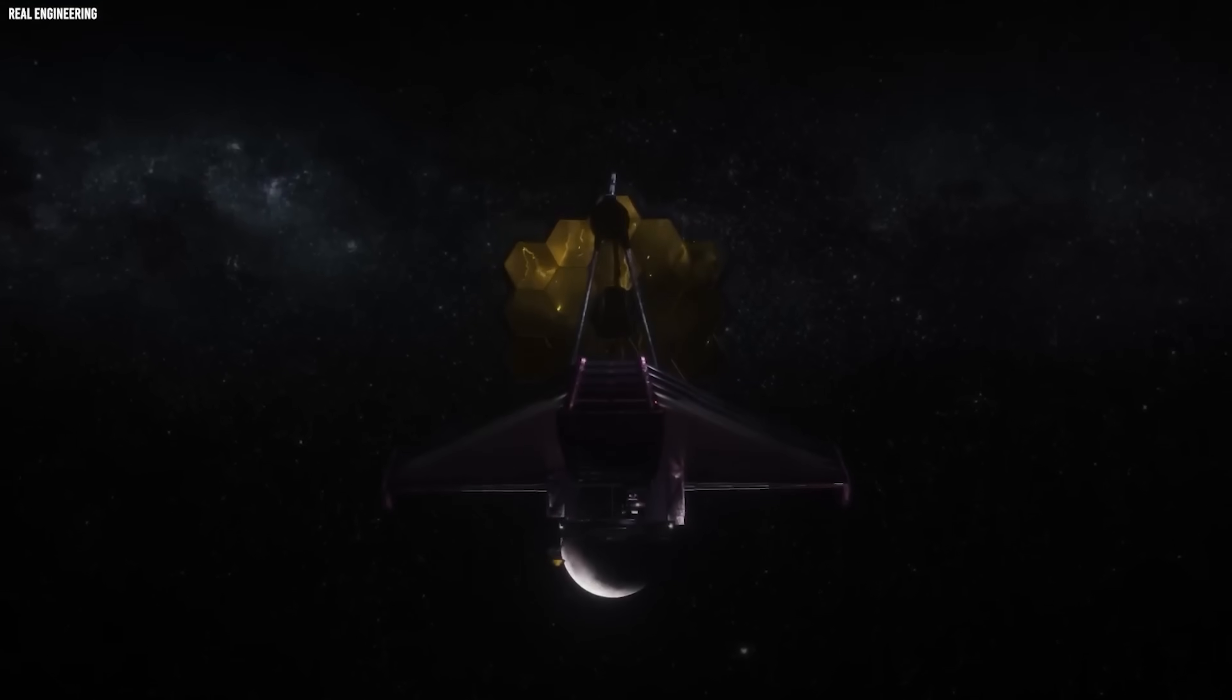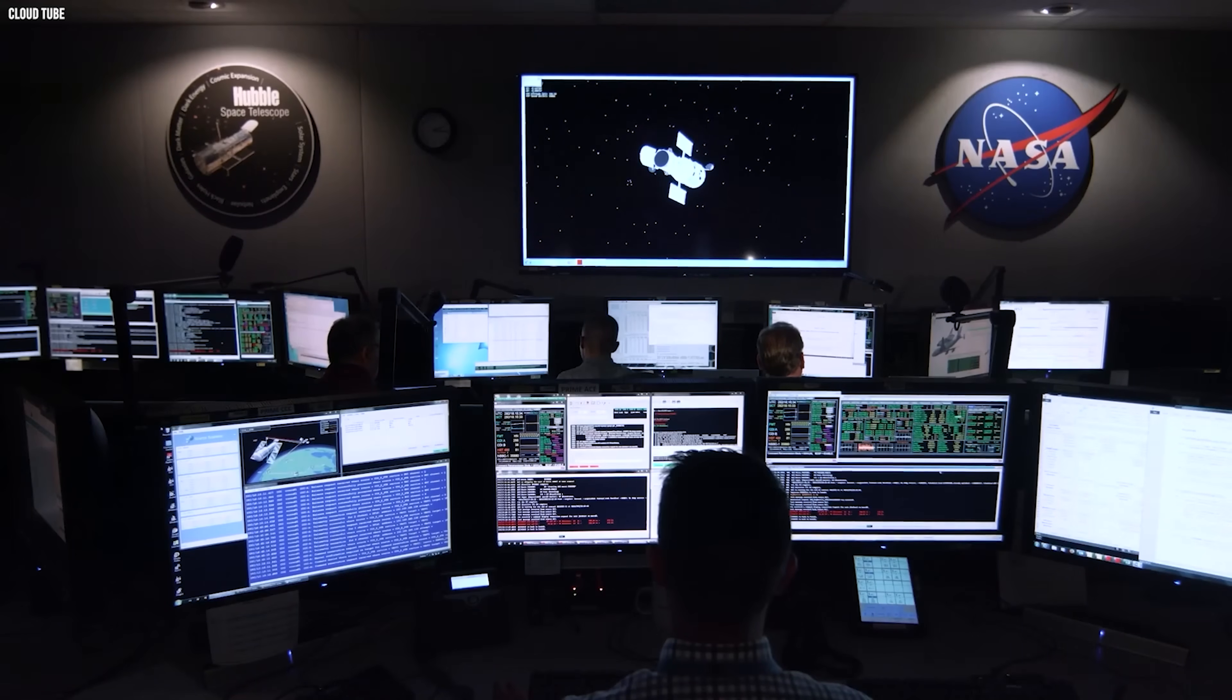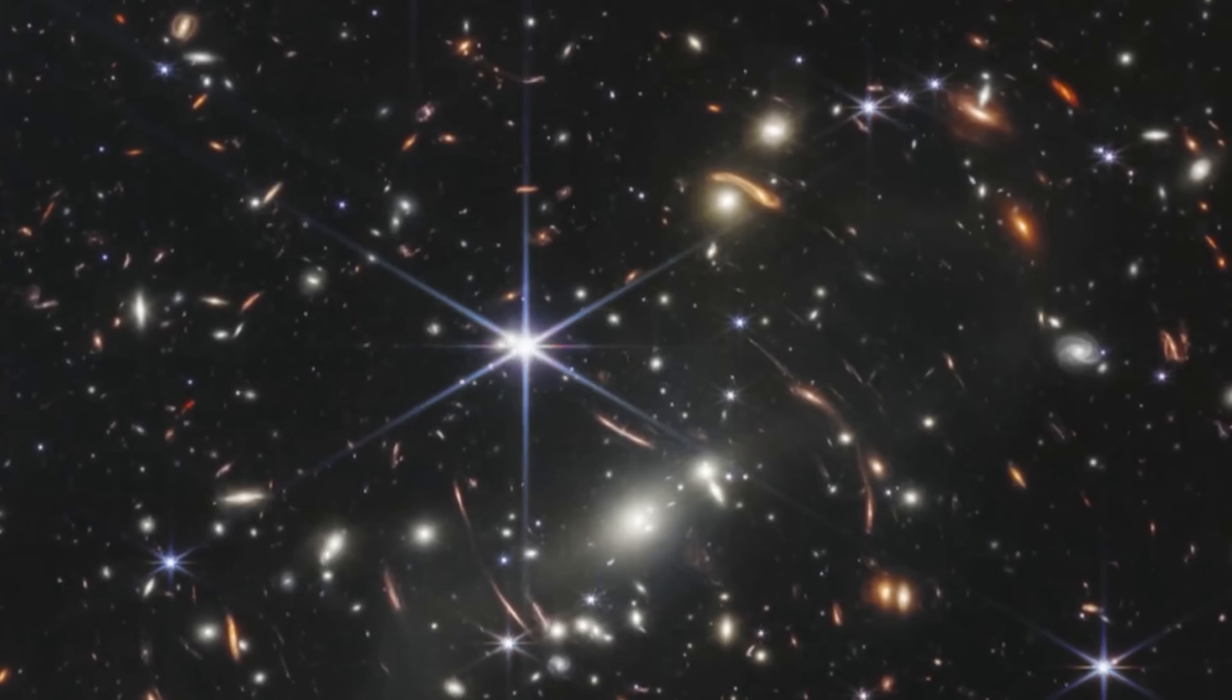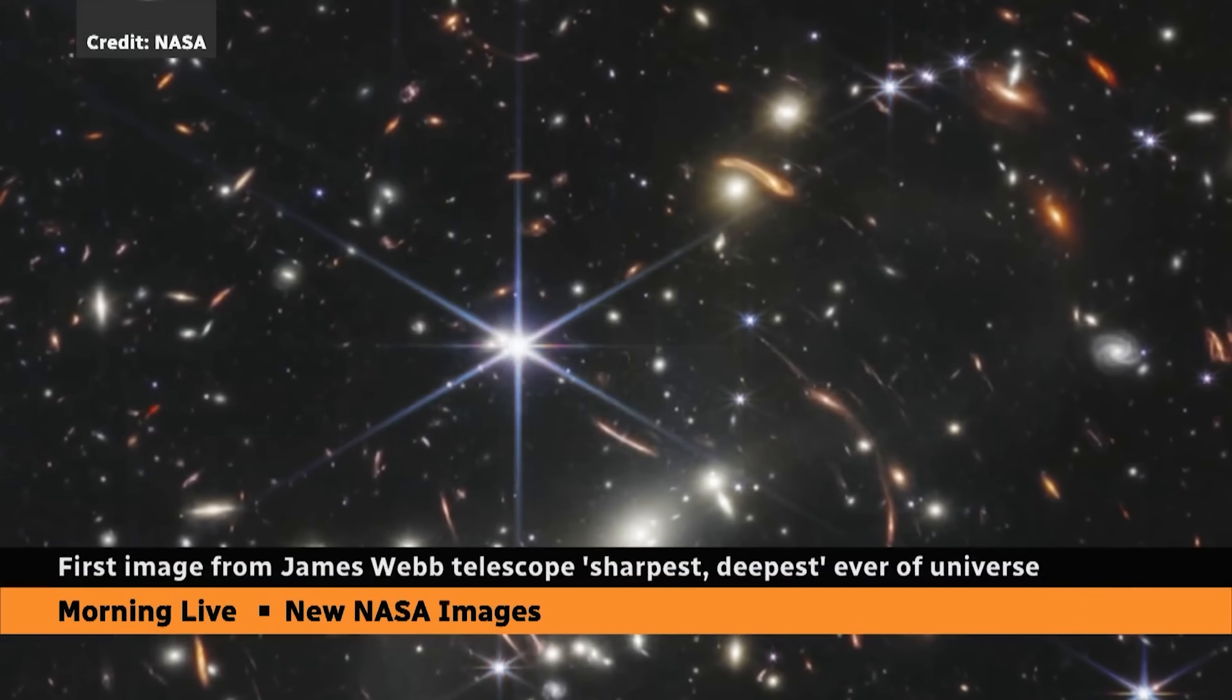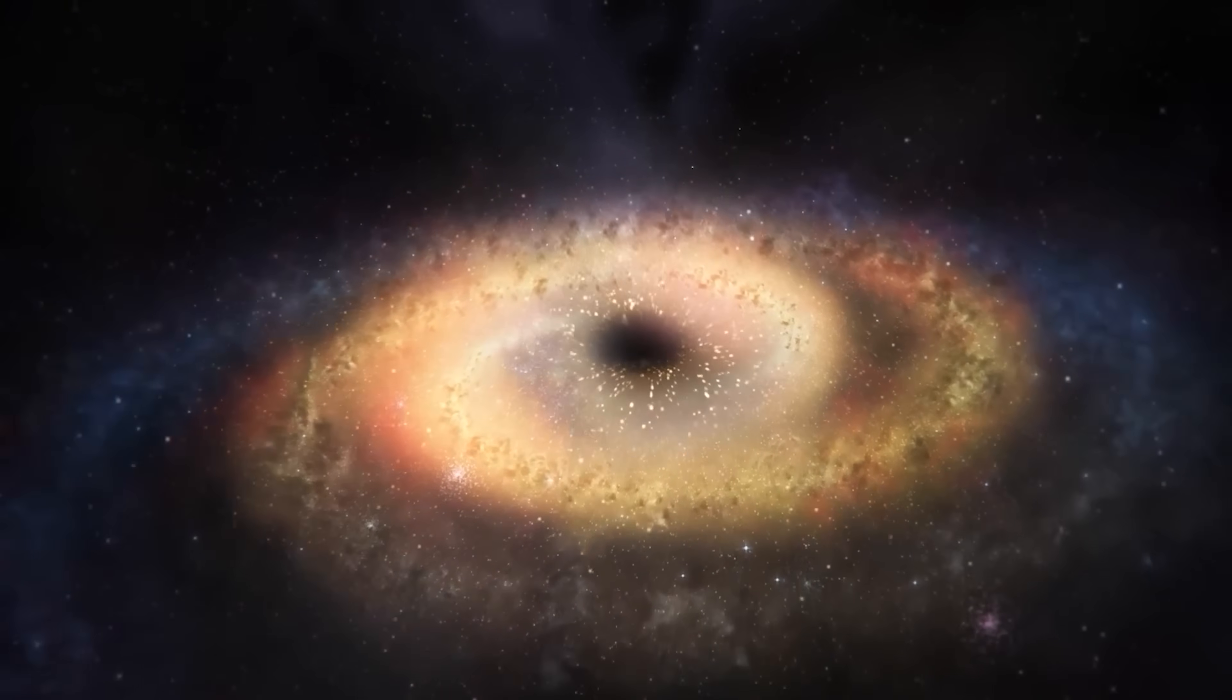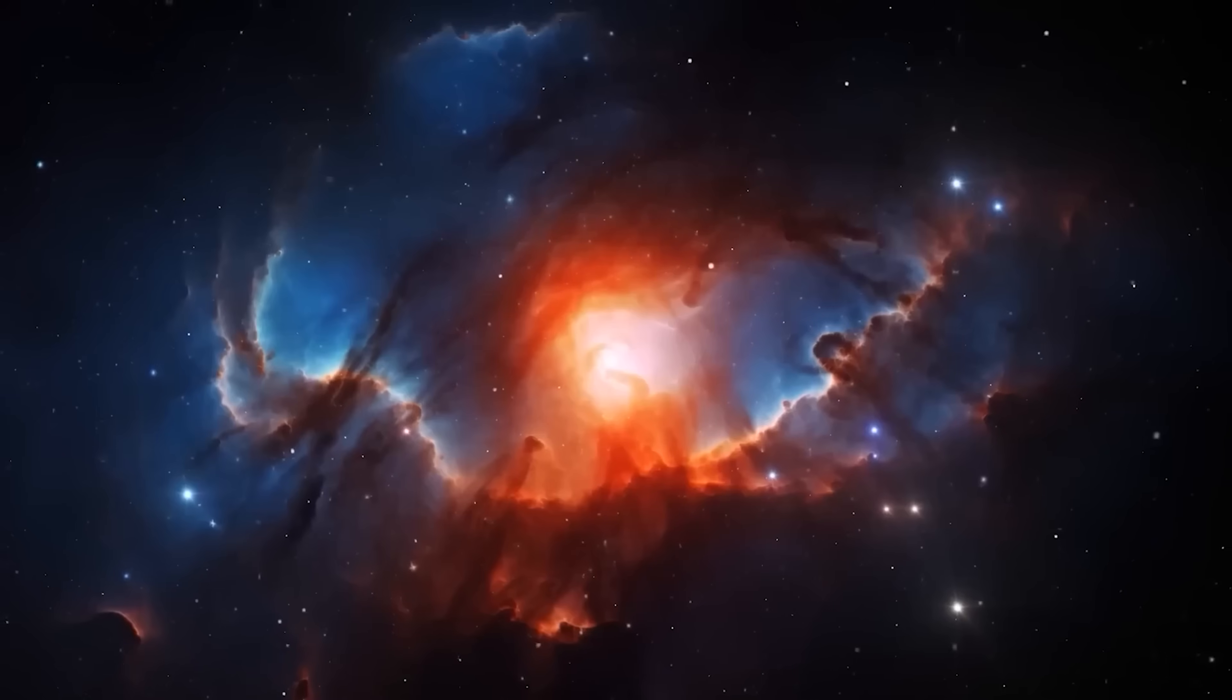When the James Webb Space Telescope opened its golden mirrors to the sky, no one imagined that its most unsettling discoveries would arrive so early. Scientists expected a deeper look at the first stars, clearer views of galactic formation, maybe even glimpses of the first black holes. What they did not expect was galaxies appearing so bright, so massive, and so mature.